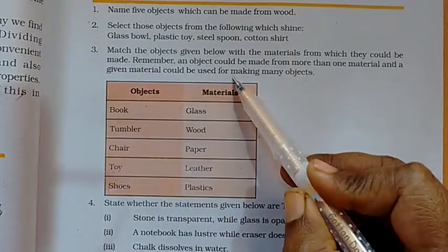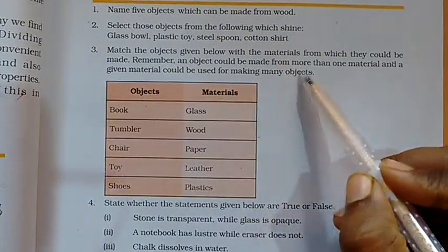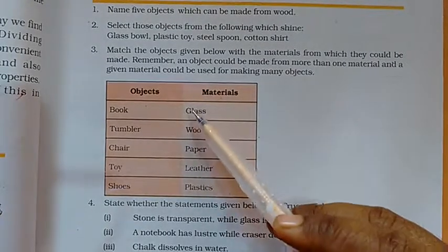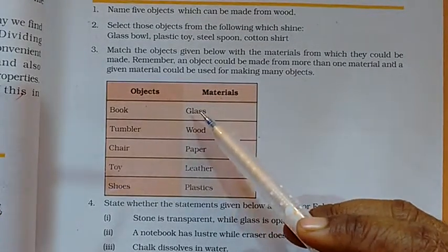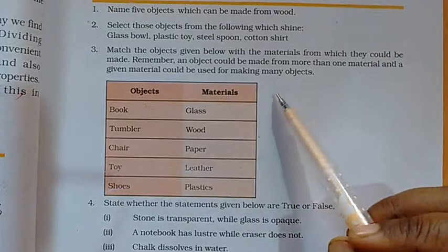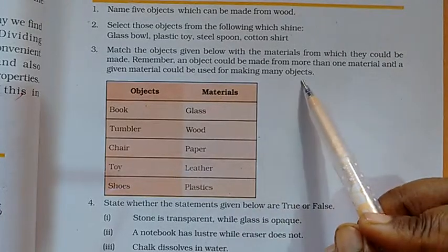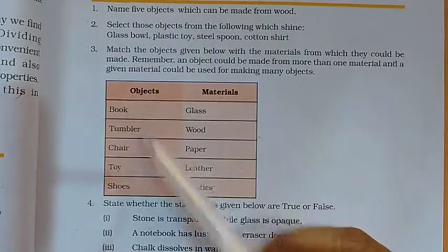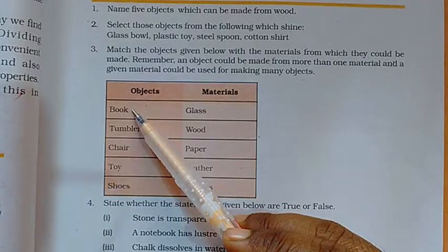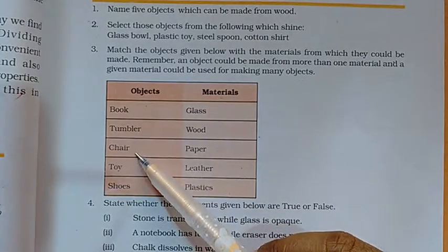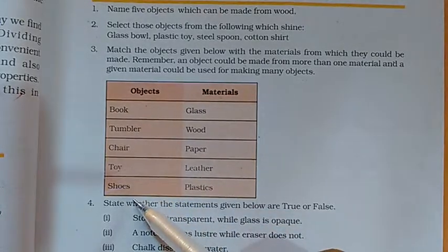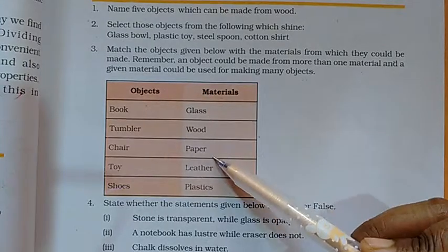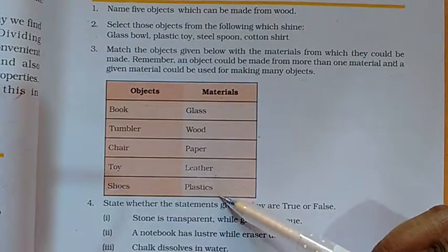Remember, an object could be made from more than one material, and a given material could be used for making many objects. The objects are: book, tumbler, chair, toy, shoes. The materials are: glass, wood, paper, leather, plastics.